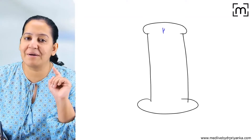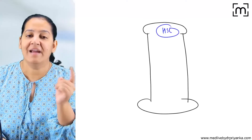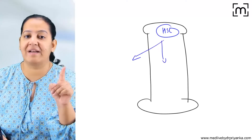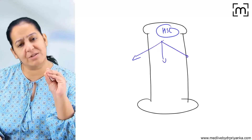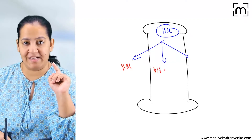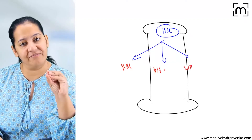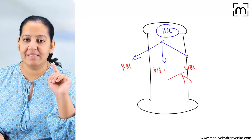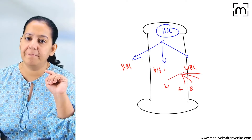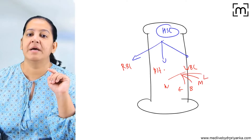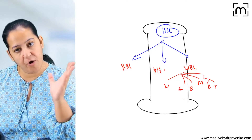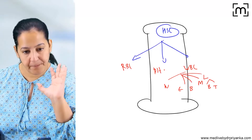In the bone marrow, the first cell is the hematopoietic stem cell. It gives rise to RBCs, platelets, and all five types of WBCs. You can see RBCs, platelets, and the five types of WBCs — that is neutrophil, eosinophil, basophil, monocyte, and lymphocyte. Both types of lymphocytes, B lymphocyte and T lymphocyte, are formed in the bone marrow.